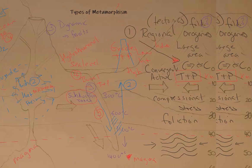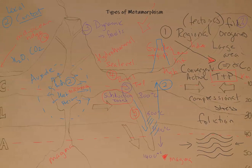There is a sixth type: impact metamorphism. If a meteorite — say the size of the KT extinction event or any large rock — impacts the Earth's surface, it will hit the crust. At the point of impact, the intense pressure from the shock and the high temperature would have a very dramatic effect on the rocks, turning much of the immediate area into metamorphic rocks due to the heat and pressure of the impact.